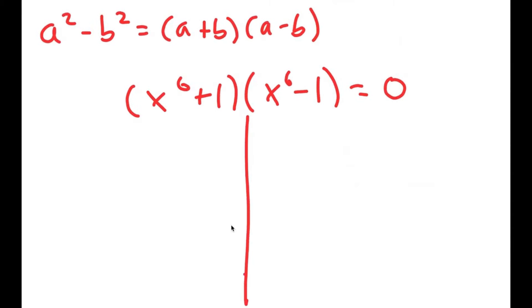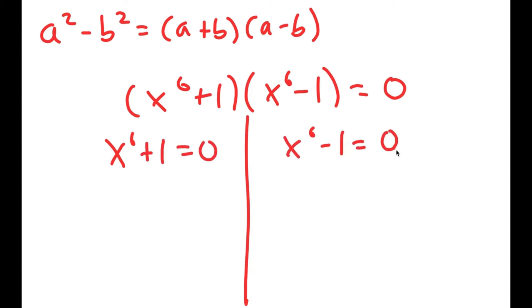This gives me two equations: x to the power of 6 plus 1 equals 0, and x to the power of 6 minus 1 equals 0.